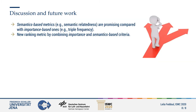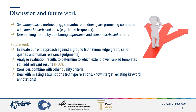Current results indicate that semantics are a good indicator of results relevance. We also introduce a new ranking metric by combining importance and semantics-based criteria. Current results are promising, but still need evaluation using an appropriate ground truth. This would allow us to evaluate not only the effectiveness of the current approach, but also determine the number of needed subgraphs.